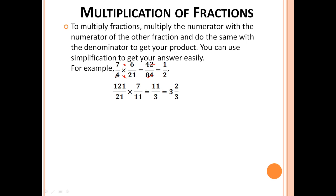4 and 6 do have a common factor which is 2, so we can simplify them: 2 twos are 4 and 2 threes are 6. Then we look at 7 and 21 — we can simplify them because they have a common factor which is 7, so 7 and 7 threes are 21.